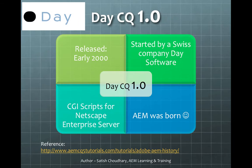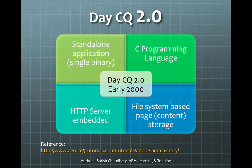DCQ 1.0, in the very early days, was released in the early 2000s by Swiss company Day Software. It was built using CGI scripts for Netscape Enterprise Server. DCQ 2.0, also in the early 2000s, was the first standalone application developed on top of C. It had an HTTP server embedded and a file-system-based page structure.